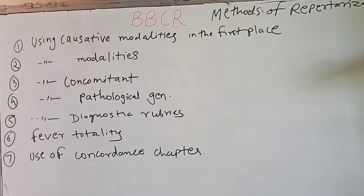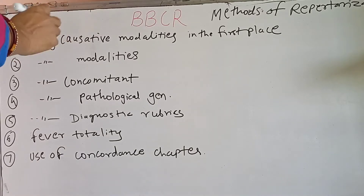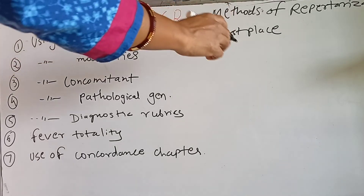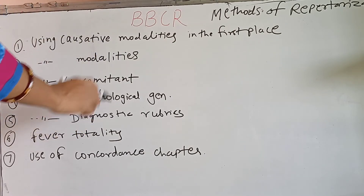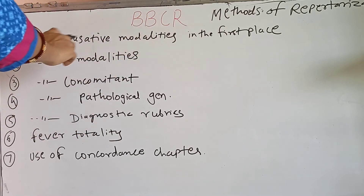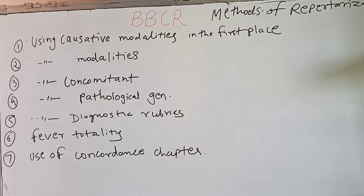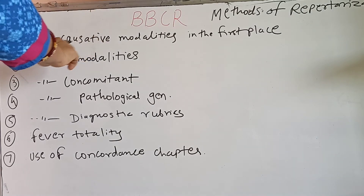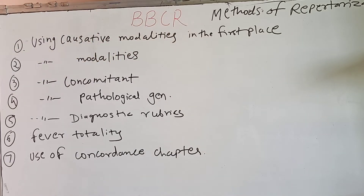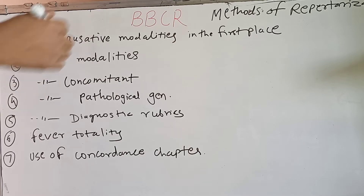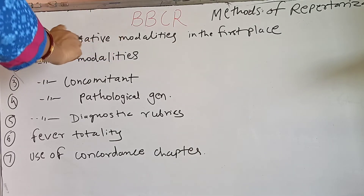The first method is using causative modalities in the first place. If causative modalities are available in the case, you can start the repertorization using causative modalities first. This acts like an eliminating symptom, similar to what we have seen in Kent's repertory.